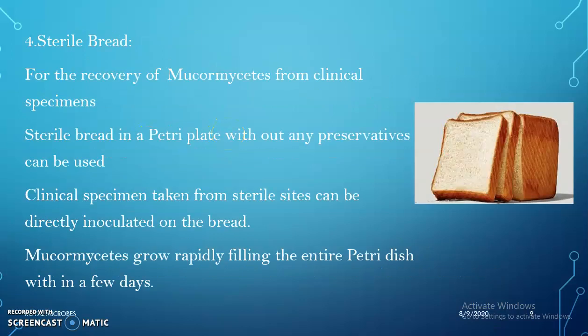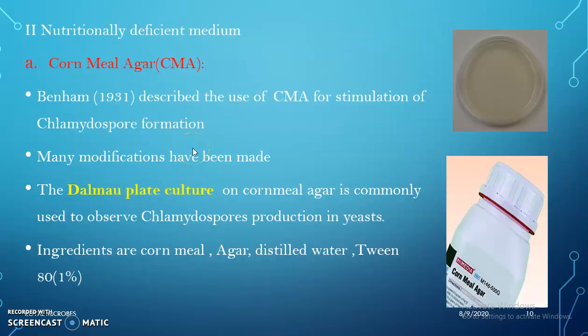The fourth medium is for the recovery of Mucormycetes from clinical specimens. Here we can use sterile bread in a petri plate without any preservatives. The clinical specimen taken from sterile sites can be directly inoculated into the bread. Mucormycetes grow rapidly, filling the entire petri plate within a few days. That concludes the first category.